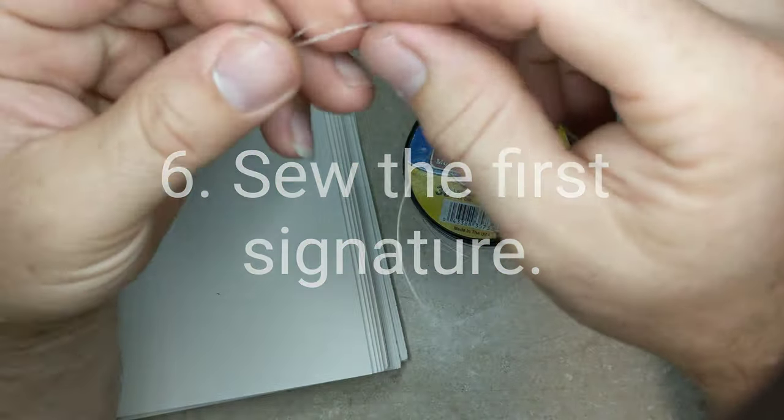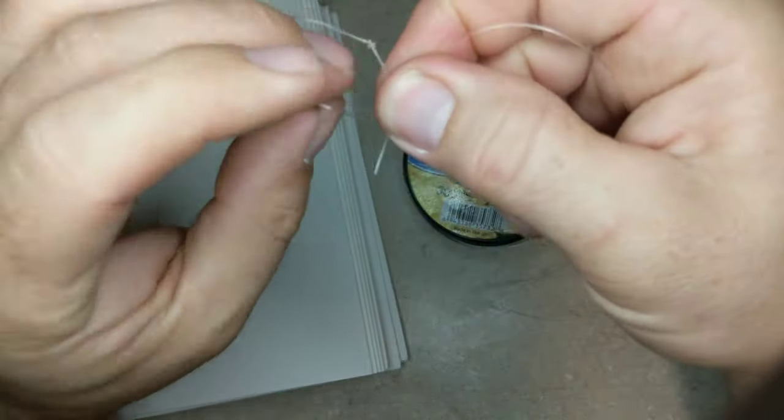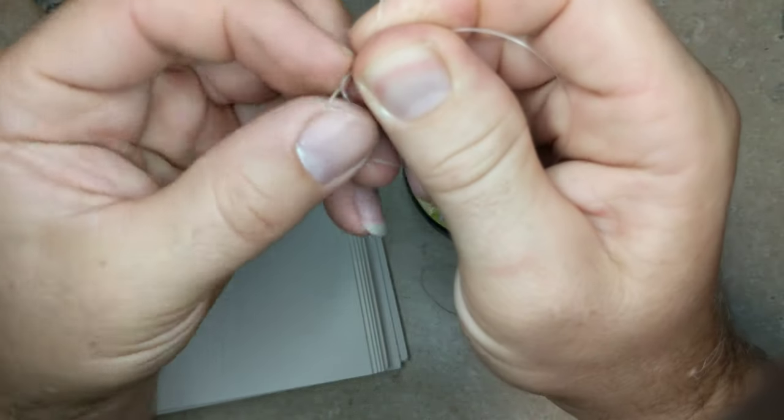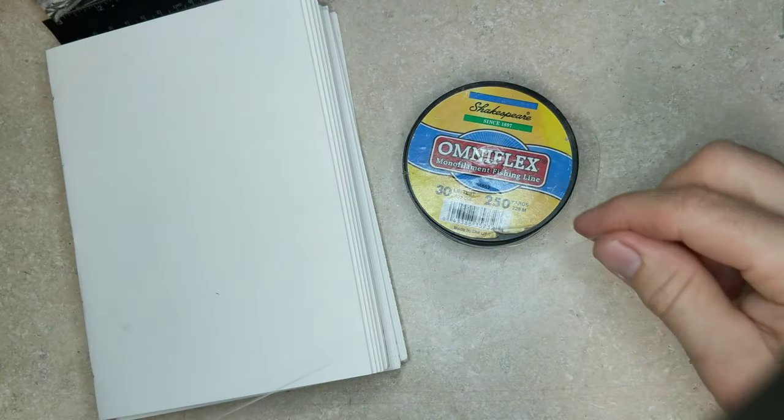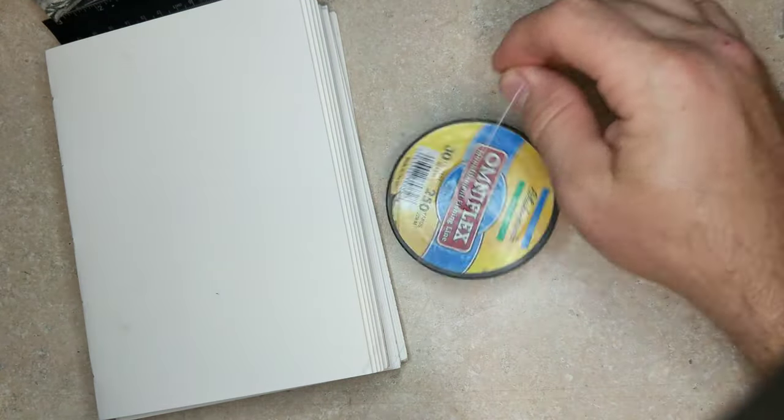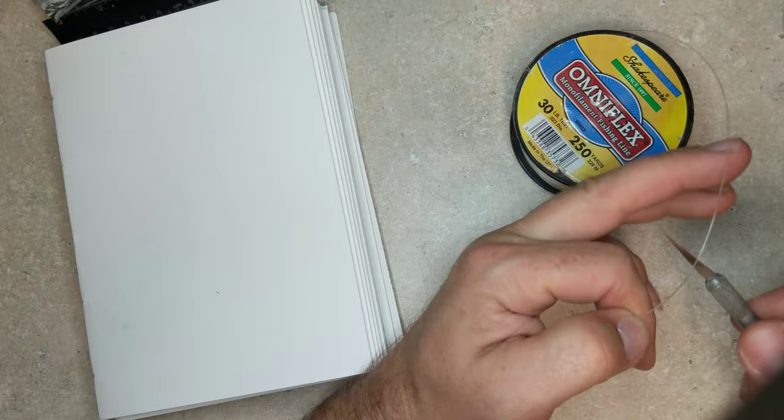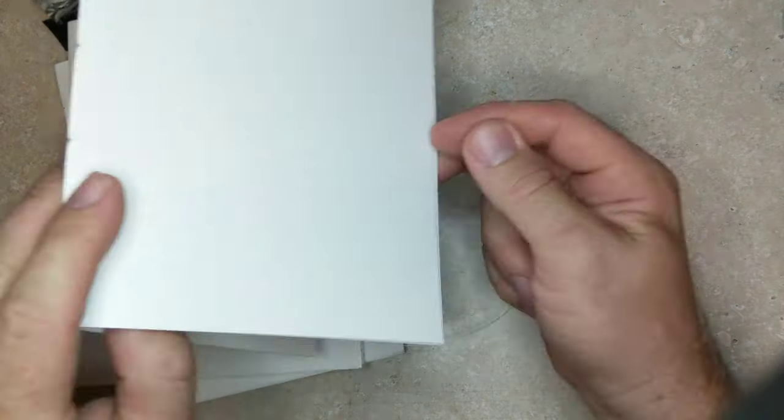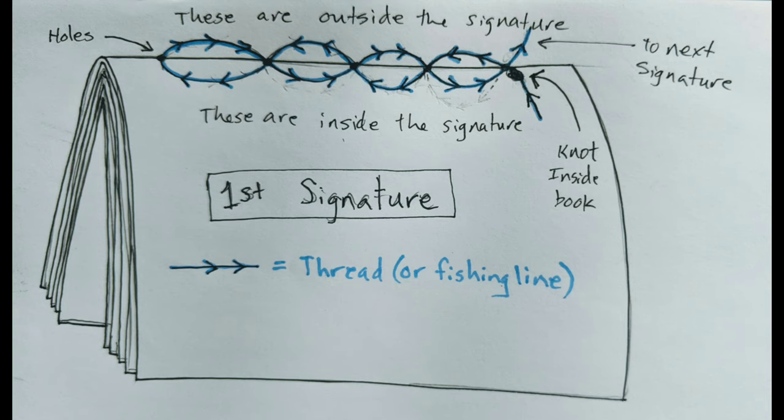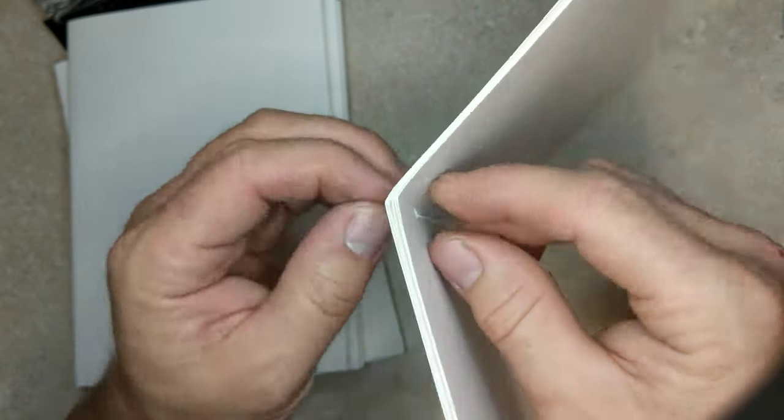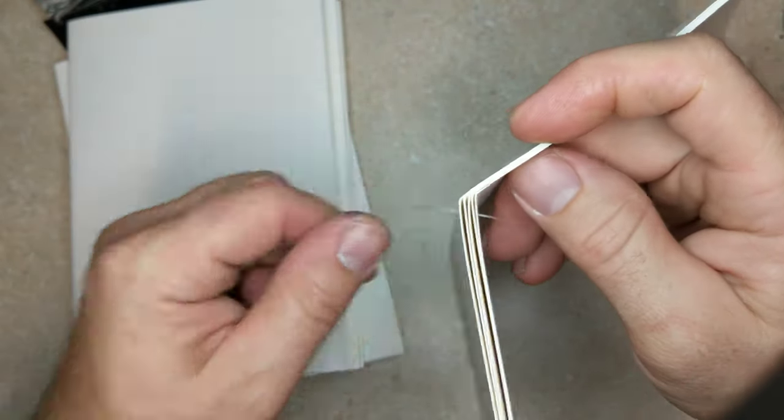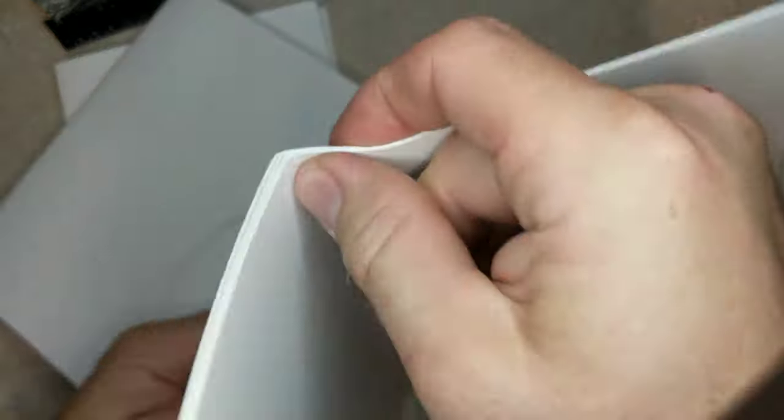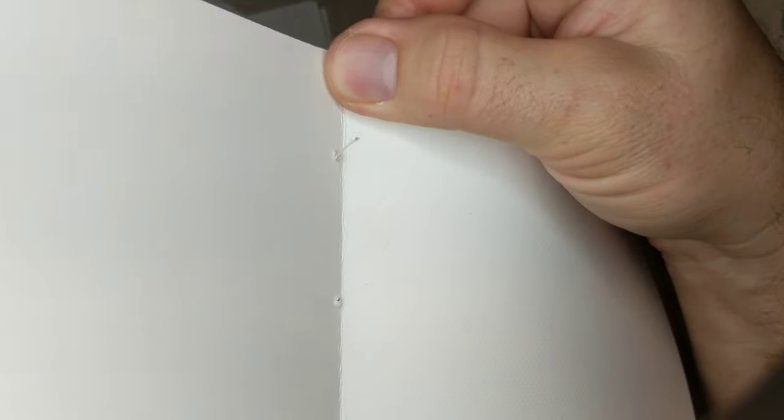But step number six, you're going to sew the first signature. Now the first signature is different than the rest. And as you can see here, I'm using fishing line. I tied a knot at the beginning of the fishing line. I rolled out enough fishing line to do all of the book. If I were to run out, I could just tie it off wherever I run out. But you don't have to use fishing line. You could use just about any kind of thread. I recommend you back the video up and pause it on that little diagram that I had there. And there are going to be two more diagrams in this video that you could pause on.